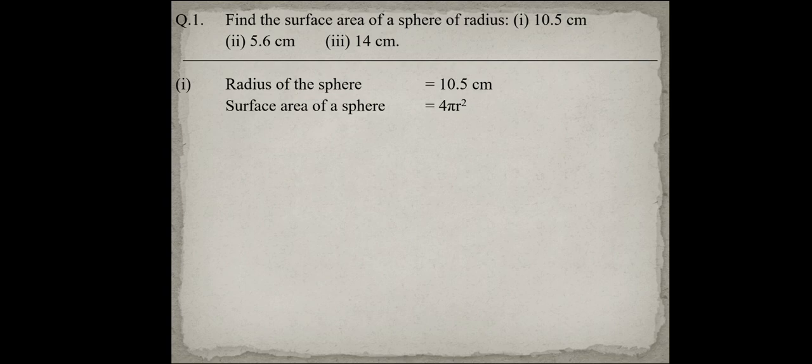Simply put the radius value: 4 into 22 upon 7 into 10.5 into 10.5. The surface area of the sphere is equal to 1386 centimeter square.